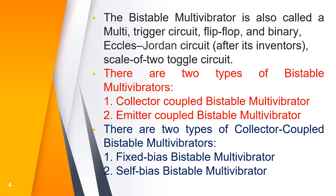There are two types of bistable multivibrators: collector-coupled bistable multivibrator and emitter-coupled bistable multivibrator. Again, there are two types of collector-coupled bistable multivibrators: first is fixed-biased bistable multivibrator, and second is self-biased bistable multivibrator. Let us see the first one — fixed-biased bistable multivibrator.